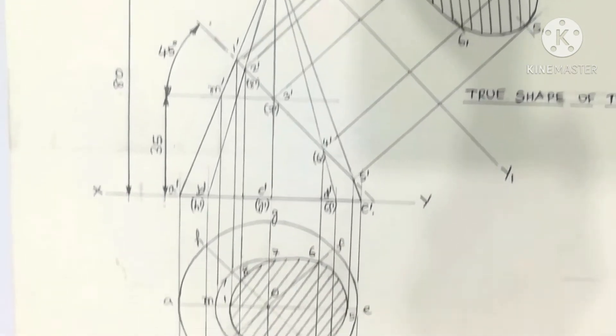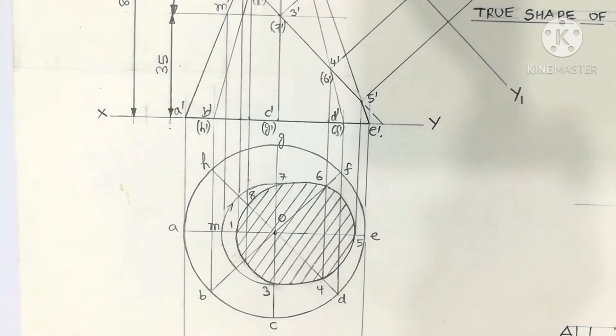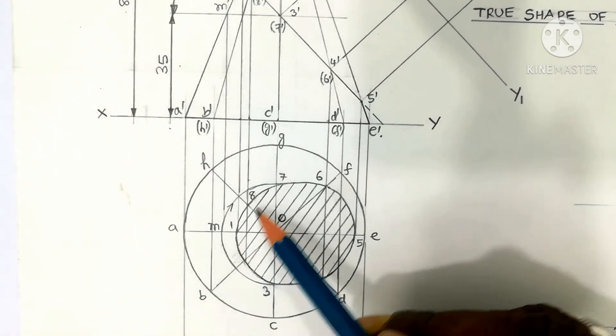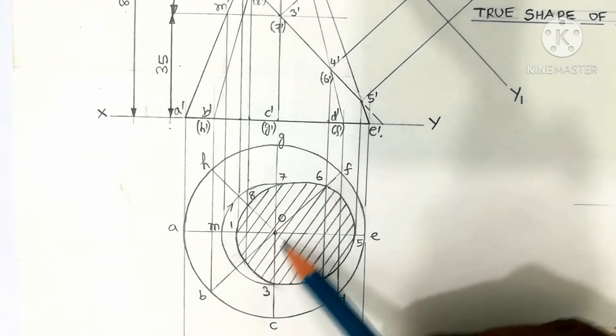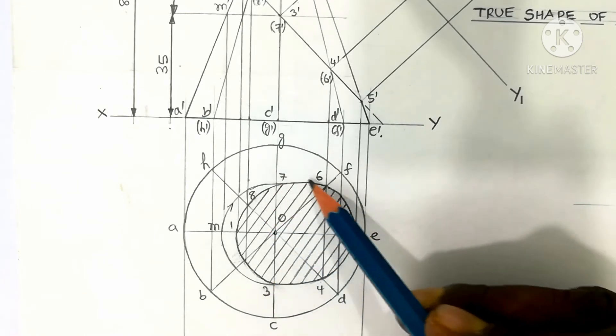This is the corresponding top view. Below the XY line is the top view. Where the inclined line intersects, the cut portion is seen in the top view as an ellipse.